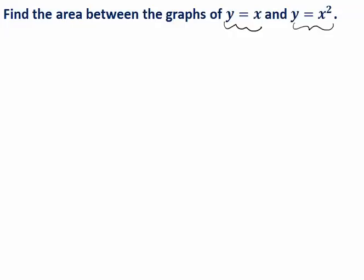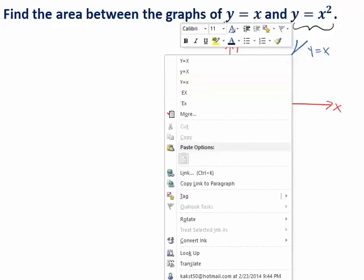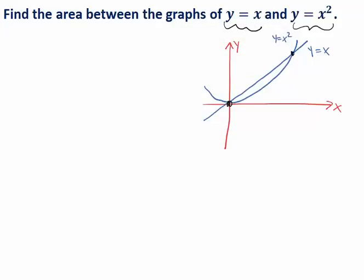As usual, we're going to start with a graph to see what this looks like. If we sketch both functions, we have a parabola and a straight line. They intersect at two points, and we need to figure out what those points are, what the x values are for those points.